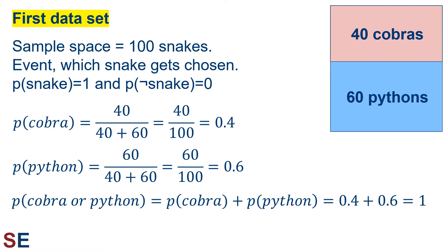Similarly, the probability of choosing a python would be 60 divided by 100 to give us a probability of 0.6. The probability of choosing a snake and it is a cobra or python will be the probability of choosing a cobra plus the probability of choosing a python, because these events are mutually exclusive — snakes are one or the other, never both. This gives us 0.4 plus 0.6 equals 1, which makes sense because in this sample space we are guaranteed to get either a cobra or a python when we choose a snake.